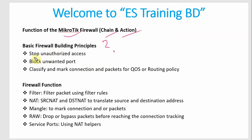First, stop unauthorized access — unauthorized access can be used to login or attack. Then, block unwanted ports. Unwanted port means it is not provisioned, so all unwanted ports can be blocked with the firewall.